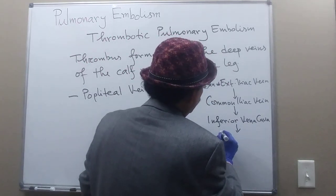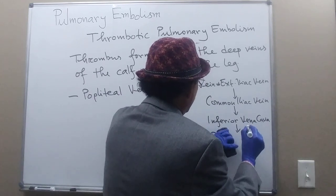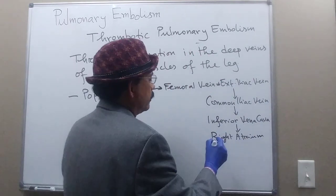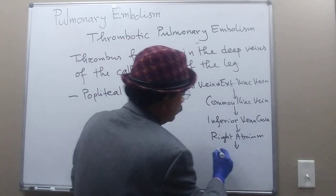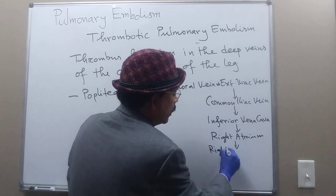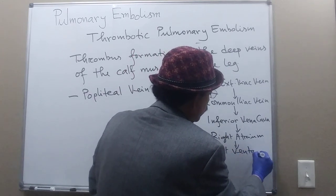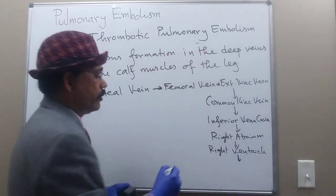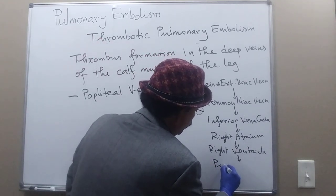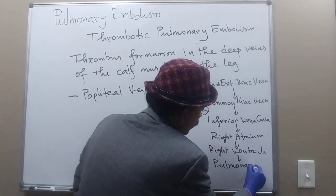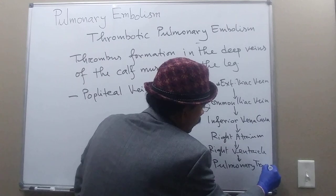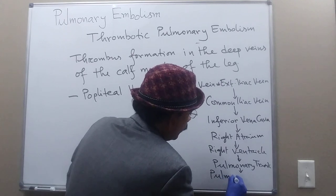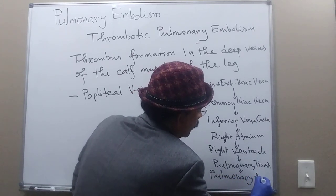From the inferior vena cava, the embolus goes to the right atrium of the heart, then to the right ventricle, and from the right ventricle it goes to the pulmonary trunk and pulmonary artery.